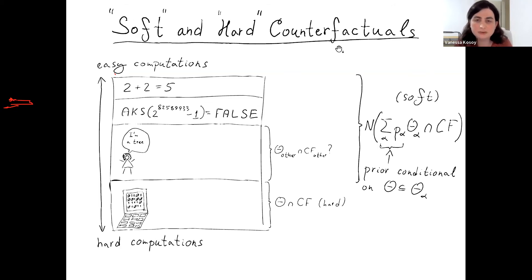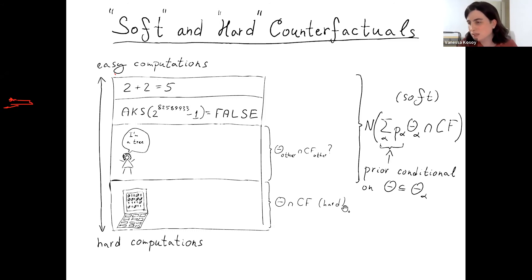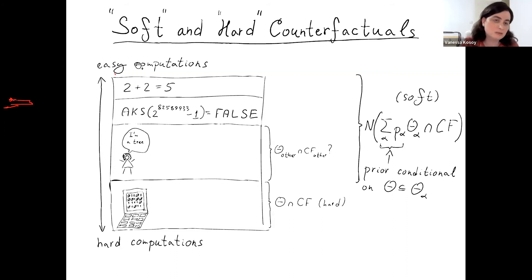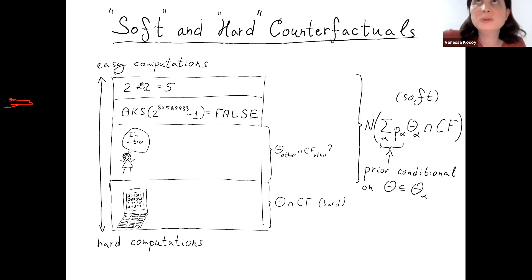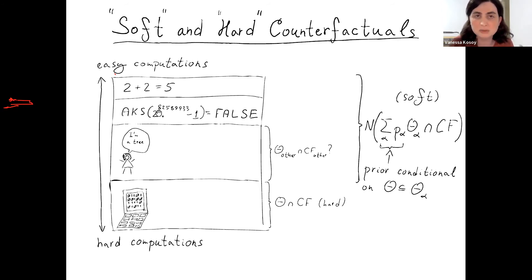Counterfactuals in information physicalism usually work by simply intersecting credal sets — it's quite simple. I call these 'hard counterfactuals.' The issue is that they can get tricky when applied to computations simpler than the agent itself. We can place different computations on a spectrum from easy to hard: '2 plus 2 equals 5' is a very easy counterfactual; the AKS primality detection algorithm returning false on a particular prime number is a more complex counterfactual; a human brain outputting 'I'm a tree' is another logical counterfactual.